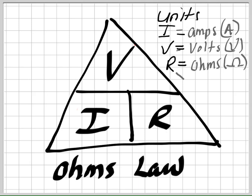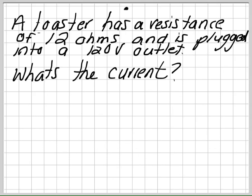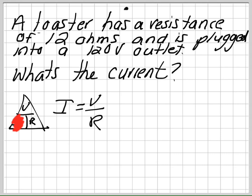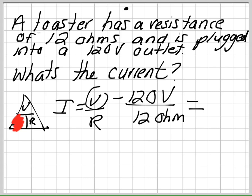Let's solve a problem. A toaster has a resistance of 12 ohms and is plugged into a 120-volt outlet. What is the current? Using the triangle, I equals V over R. The voltage is 120 volts and the resistance is 12 ohms, so 120 divided by 12 gives you 10 amps.